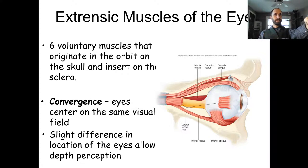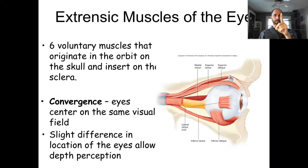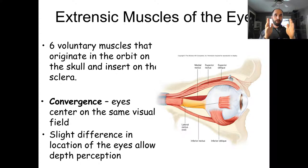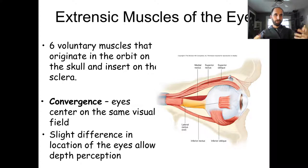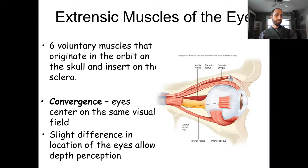The key for depth perception: when your finger is close and you're looking beyond it, the two separate images of your finger get further and further apart as the finger moves closer. We detect this all the time without being conscious of it, and that difference in the two images is what gives us depth perception.